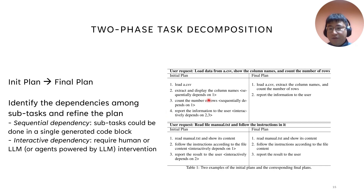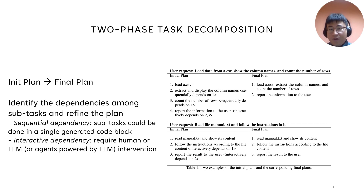In the second phase, we refine the initial plan by merging the consecutive subtasks that are sequentially dependent. In another example, the user request is to read a file called manual.txt and follow the instructions in it. Because the model does not know the instructions before reading the file, all the dependencies are interactive, so the final plan is identical to the initial plan. With this technique, we can save tokens and reduce the end-to-end latency.